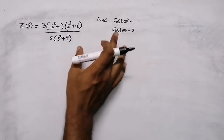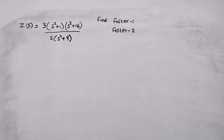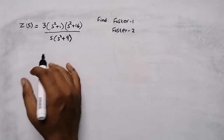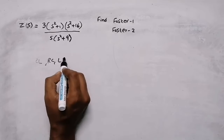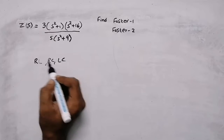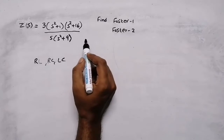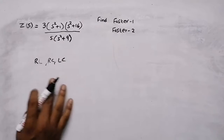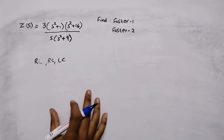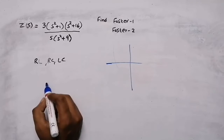In this question we need to find the Foster 1 and Foster 2 network of this impedance function. The first step is to identify which network it is — whether it is RL, RC, or LC network. In some questions they will mention it, but if they don't, we need to determine it by drawing the pole-zero plot.